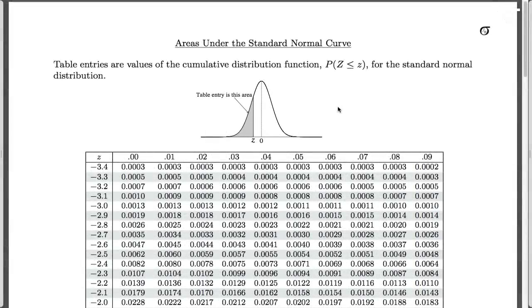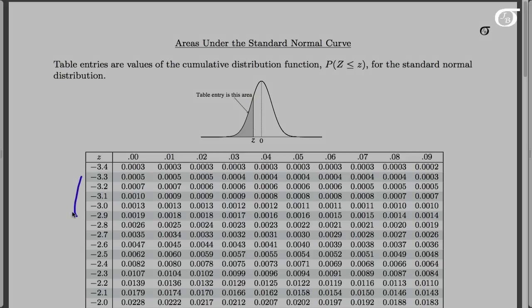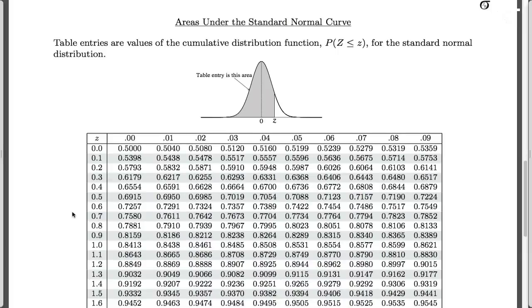This particular type of table gives the area to the left under the curve, and there are two pages to the table: one with negative values of Z and the other one with positive values of Z. What we wanted to find, remember, was the area to the left of 1.43. That is precisely what this table gives us.